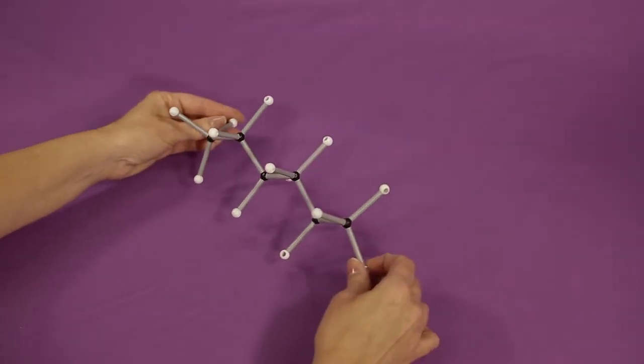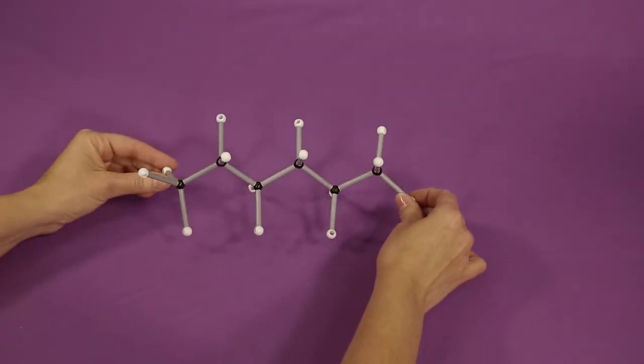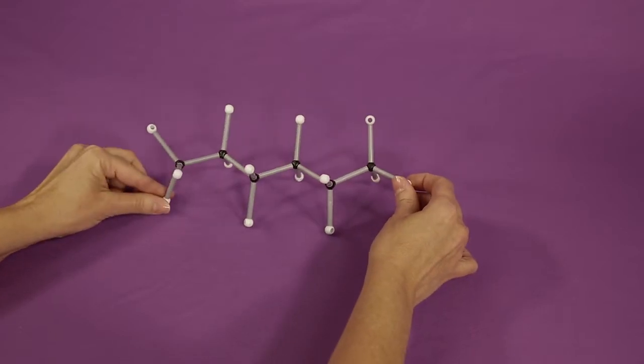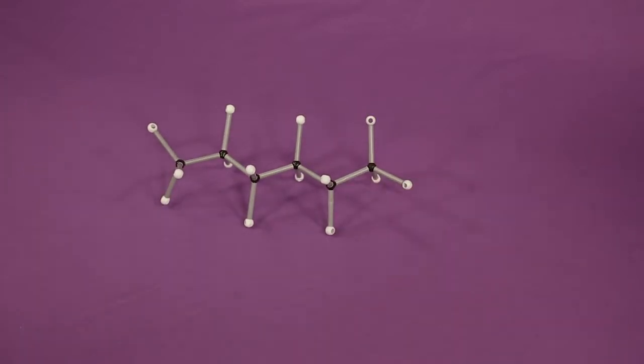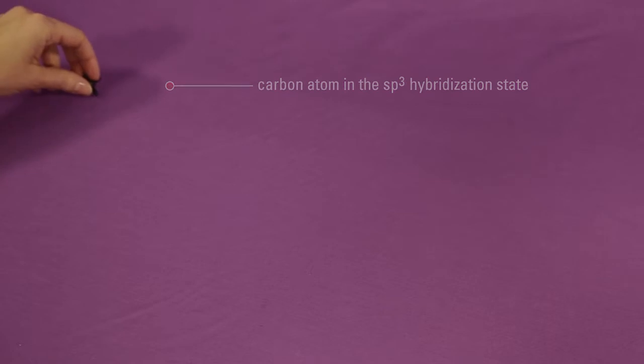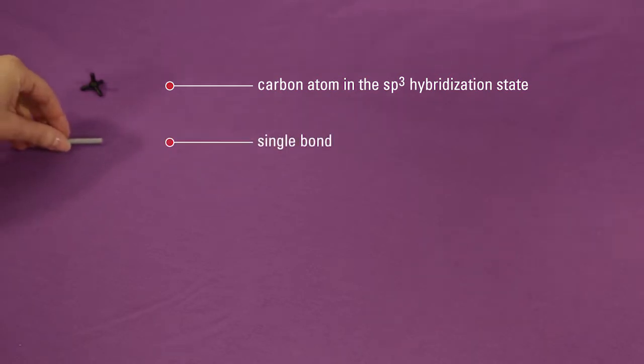This video demonstrates building alkanes using a model set. Before we begin, let's identify the different pieces in your model set that are useful for building an alkane. The black ball with four prongs represents a carbon atom in the sp3 hybridization state. The gray hollow link represents a single bond. The white ball with one prong represents hydrogen.